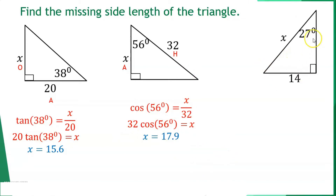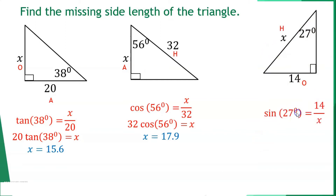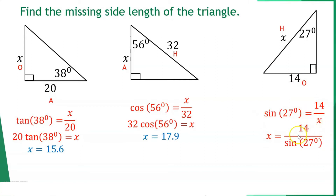Another example: 27 degrees is the angle, x is the hypotenuse, and 14 is the opposite side. Using sine: sin(27°) = 14/x. Cross-multiplying gives x = 14/sin(27°), so x ≈ 30.8.